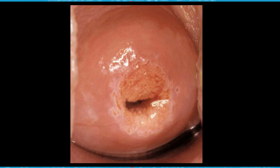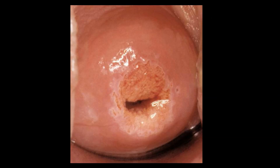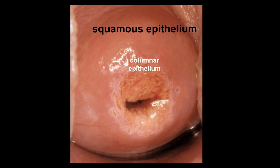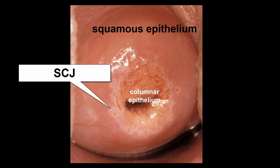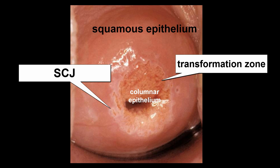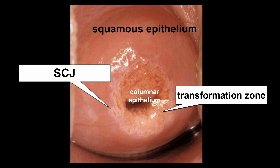This colposcopic photograph shows the cervix treated with acetic acid. The original squamous epithelium is pink and smooth and the columnar epithelium is red and irregular. Here is the old SCJ, and the transformation zone with squamous metaplasia appears white.